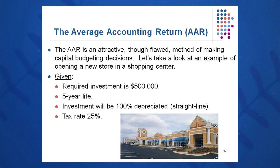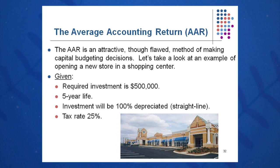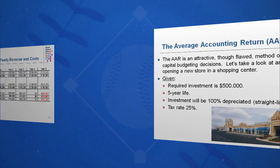Let's look at a sample investment. This project costs — let's say we're going to build a new store in a shopping center — $500,000, five-year life. The investment will be 100% depreciated straight line to zero, and the tax rate is 25 percent.